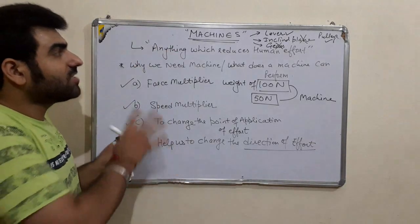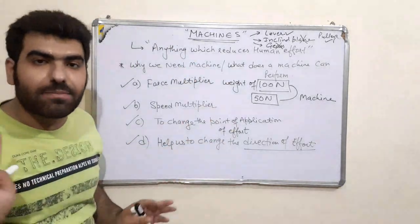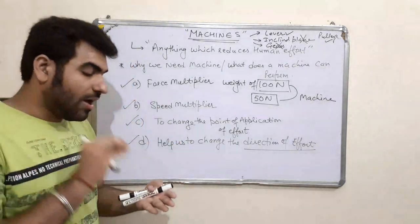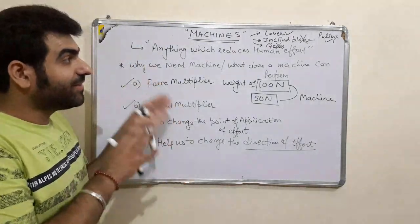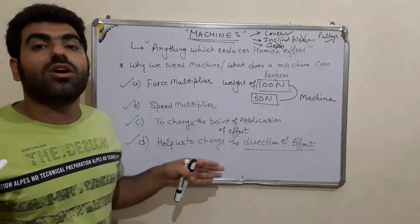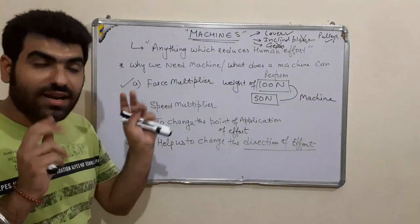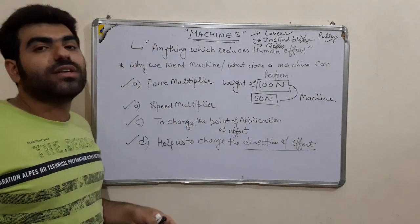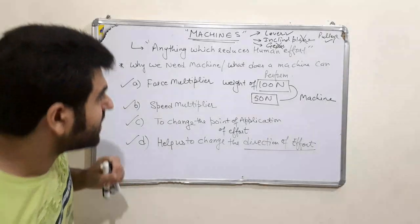So to summarize, a machine can either act as a force multiplier, a speed multiplier, change the point of application of effort, or change the direction of effort. This is the introductory part of the machine chapter. There are lots of numericals which we will discuss. This is just an introductory lecture about machines.